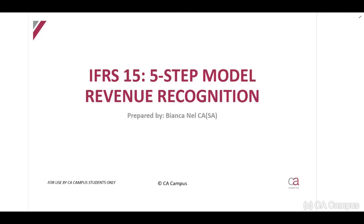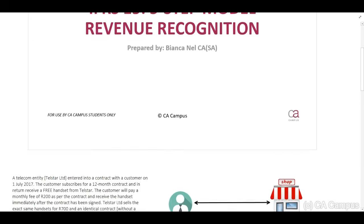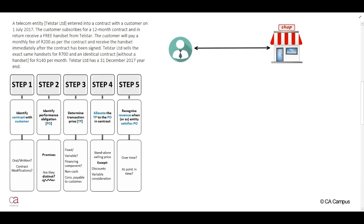In this recording, we will work through a basic example on how to apply the IFRS 15 five-step model for revenue recognition. Before we look at the example, let's revise our five steps. Step one, we need to identify the contract with a customer. There has to be a customer and an entity, and a contract between these two parties — an agreement in terms of the criteria of IFRS 15 paragraph nine.